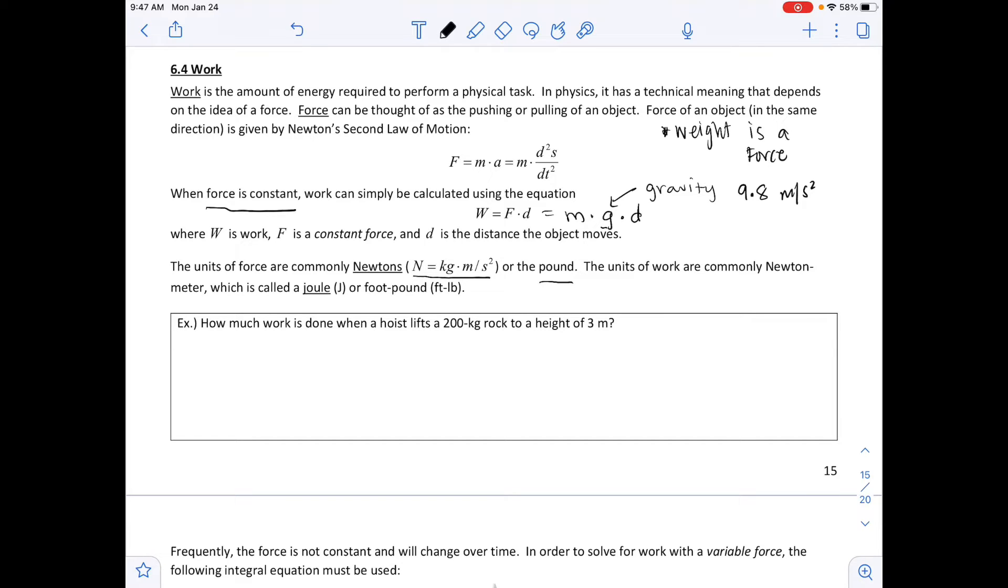The units of work are commonly newton-meters, which are called joules, or foot-pounds. So we have an example that says how much work is done when a hoist lifts a 200 kilogram rock to a height of 3 meters. Work equals force times that distance, and it's a constant force. Our constant force would be gravity. So we have m times g times d, and that mass would be 200 kilograms. Gravity is 9.8 meters per second squared, and that distance is 3 meters.